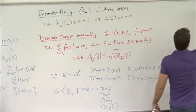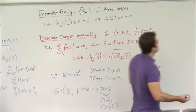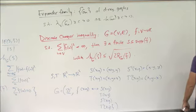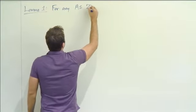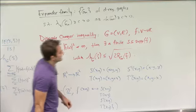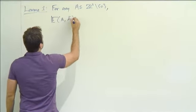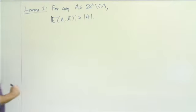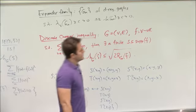Here's the main technical lemma: for any subset A of the integers that doesn't contain zero, the number of edges from A to its complement is at least the size of A. So in some sense this infinite graph is expanding. This is the claim, and this is the really the expander part of the whole proof.